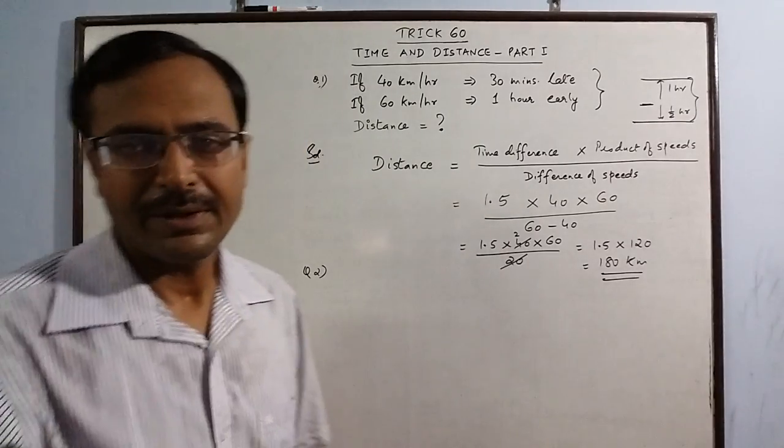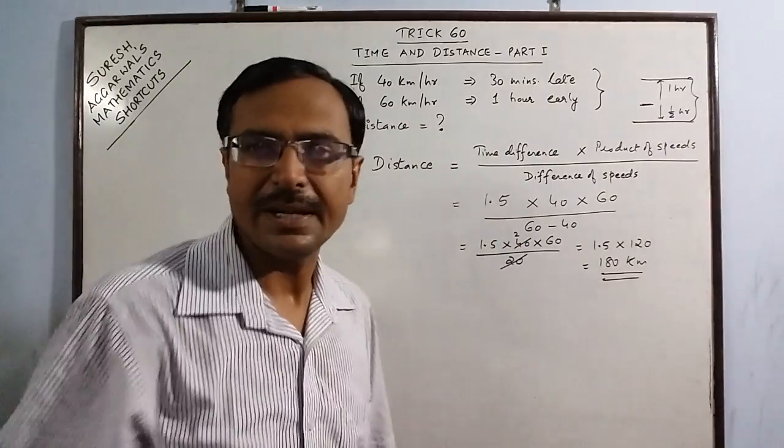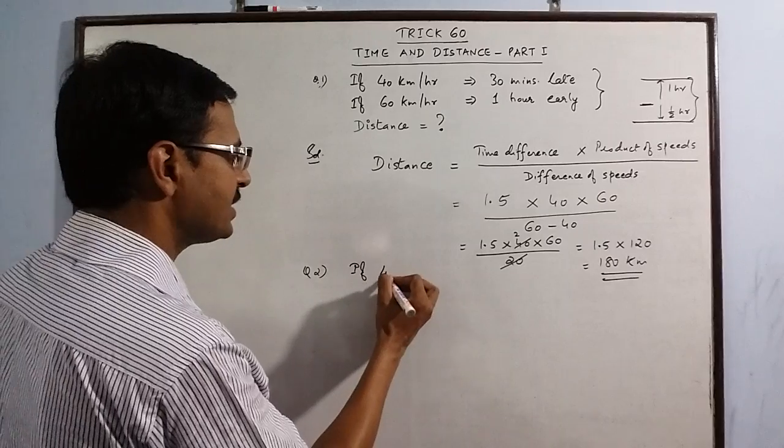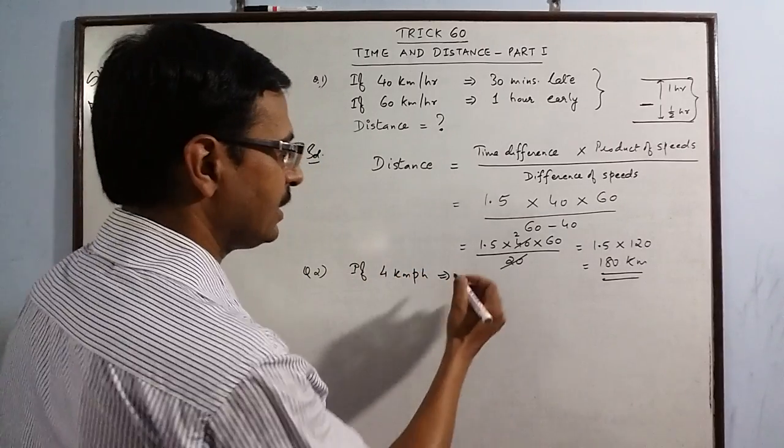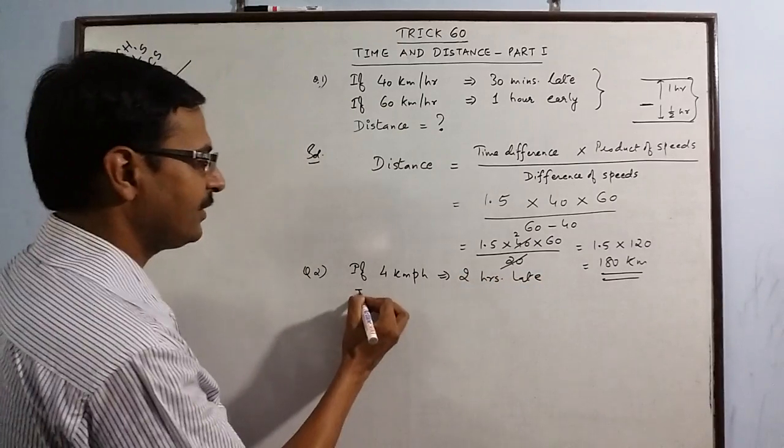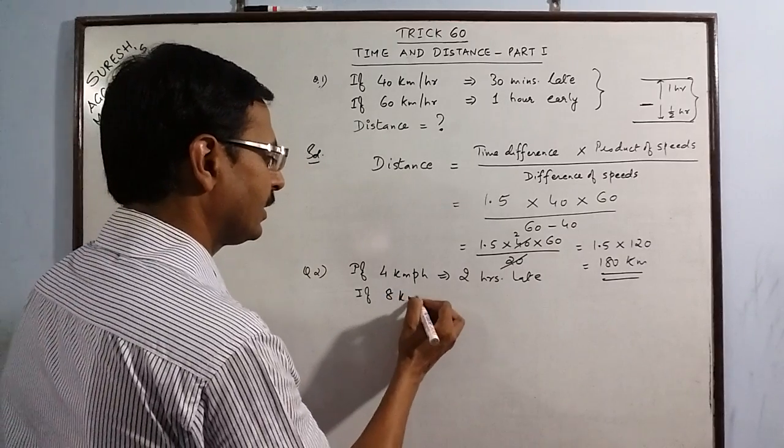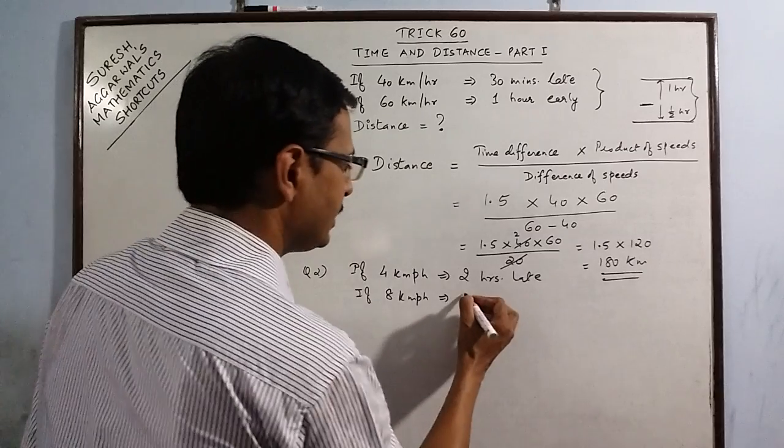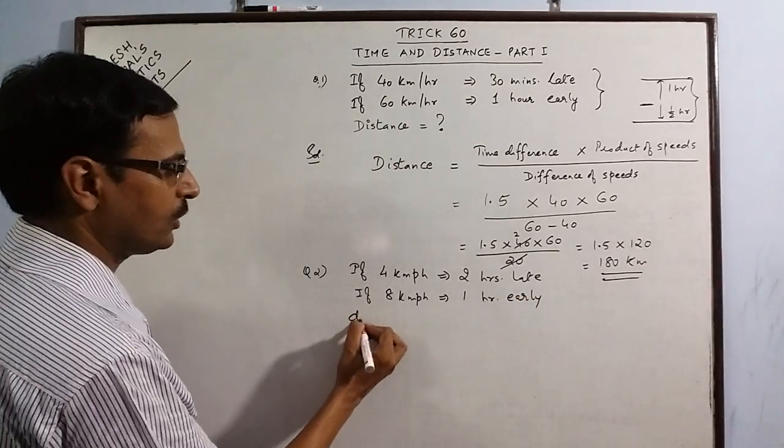Let us assume that there is a cyclist who is cycling at a particular speed to reach his destination. If the speed is 4 kilometers per hour, then he reaches 2 hours late. But if he speeds up and increases the speed to 8 kilometers per hour, then he reaches 1 hour early. Again we are required to find the distance.